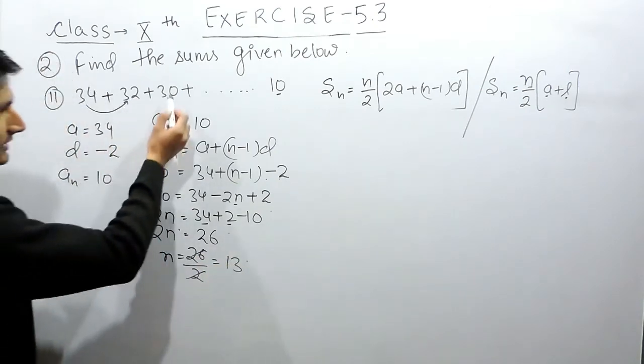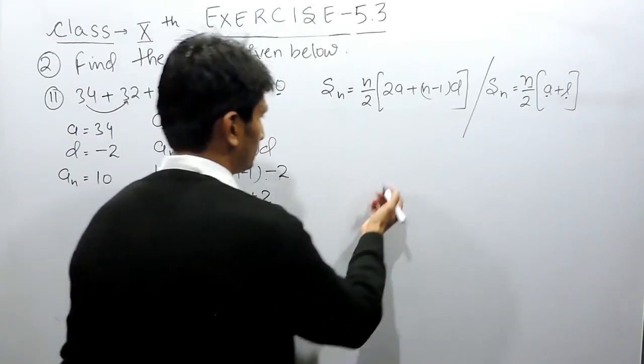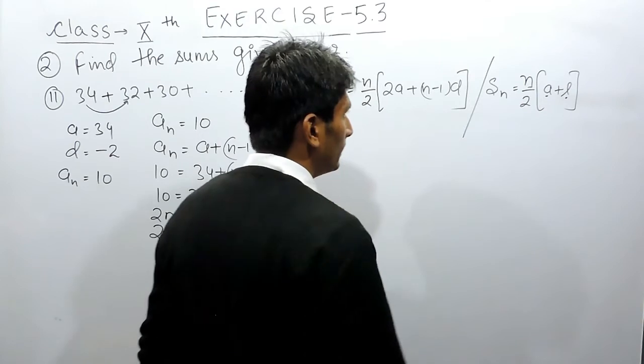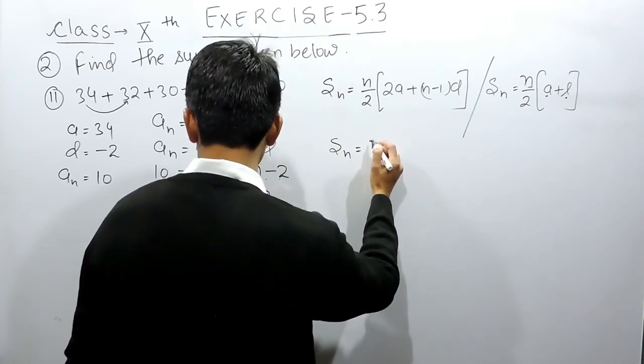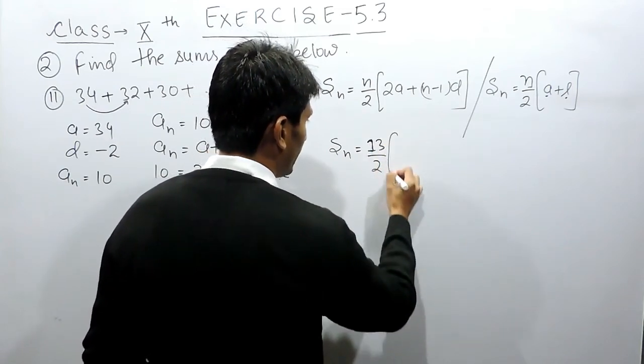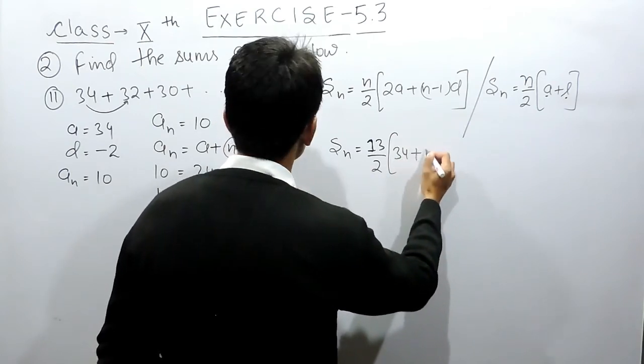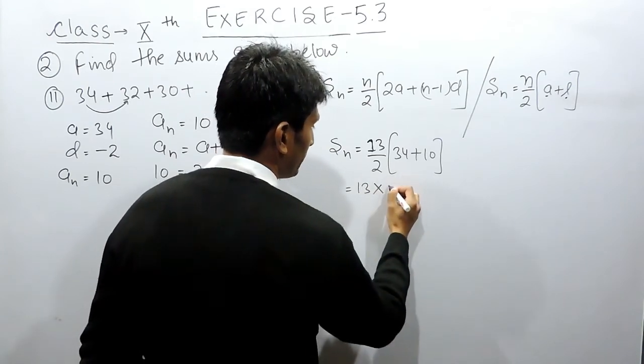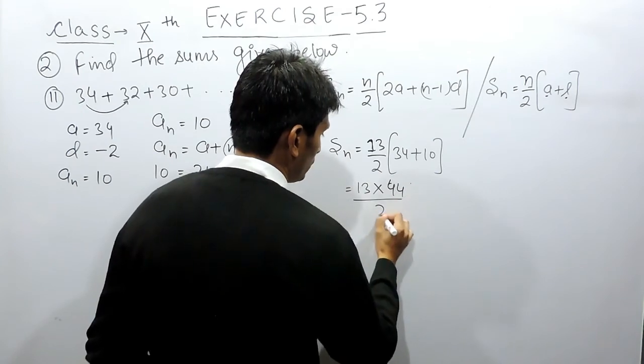There are 13 terms in this AP. We can find the sum using either formula. Using S_n = n/2(a + l), we have 13/2 times (34 + 10). This equals 13/2 times 44.